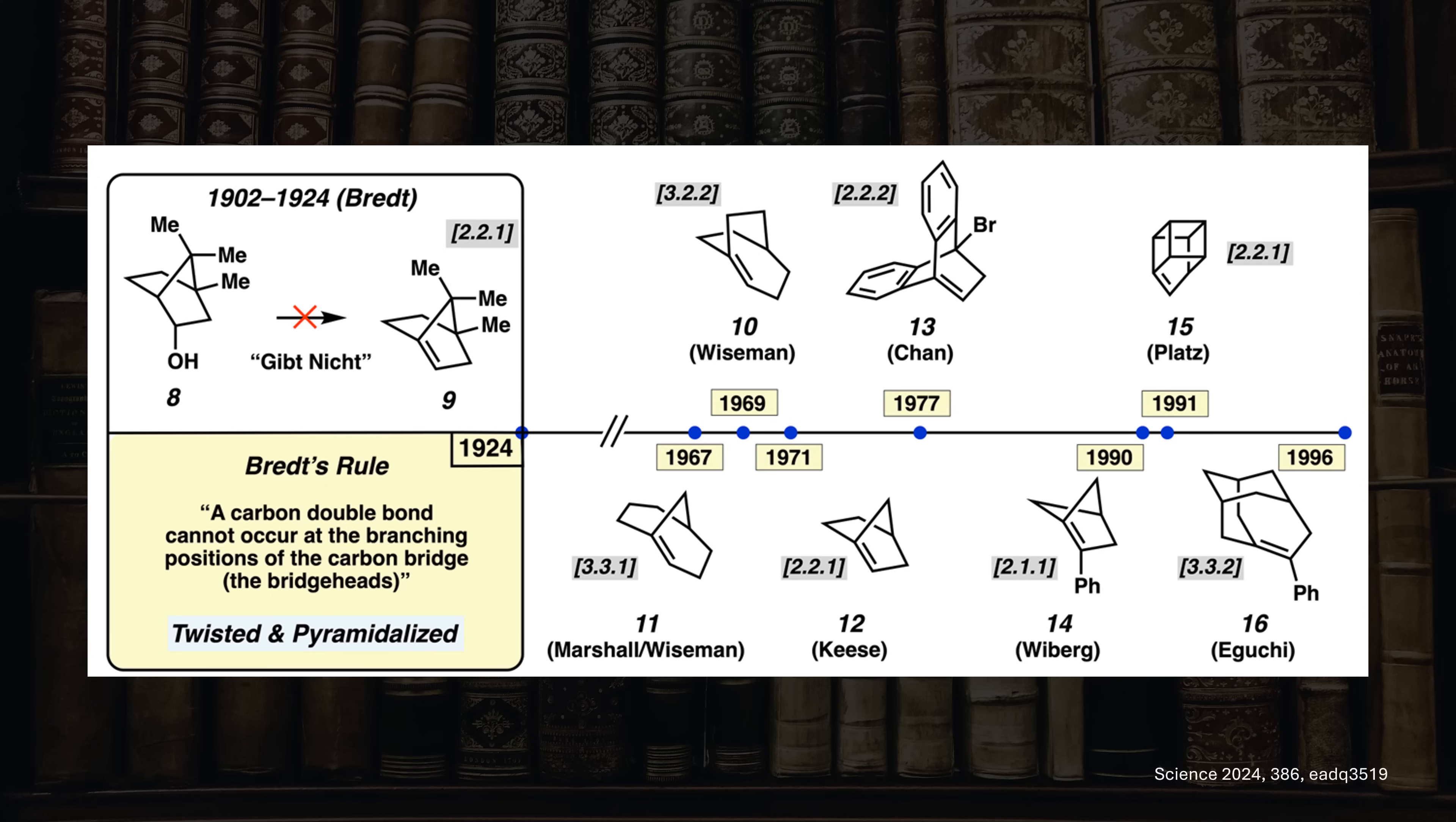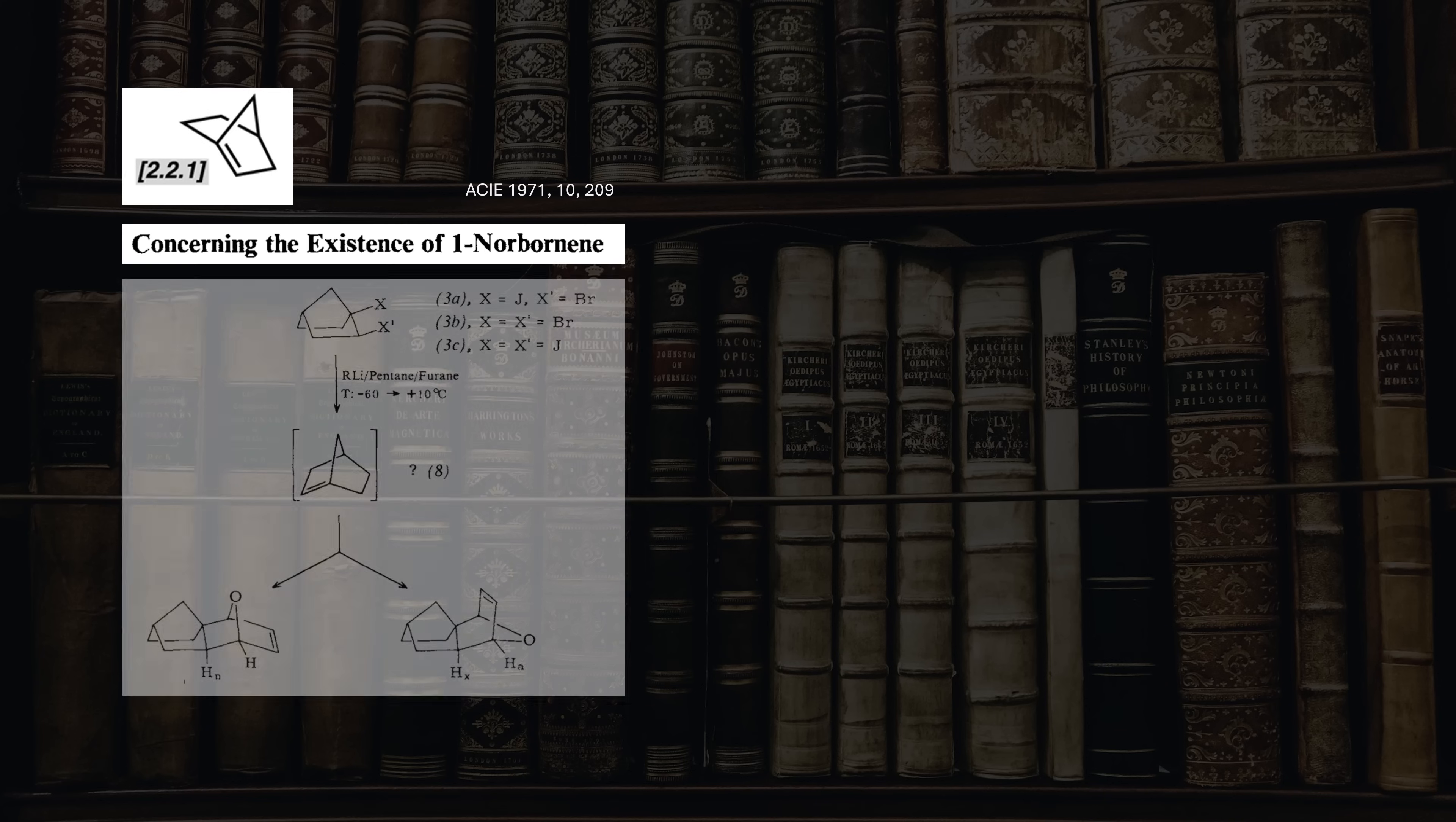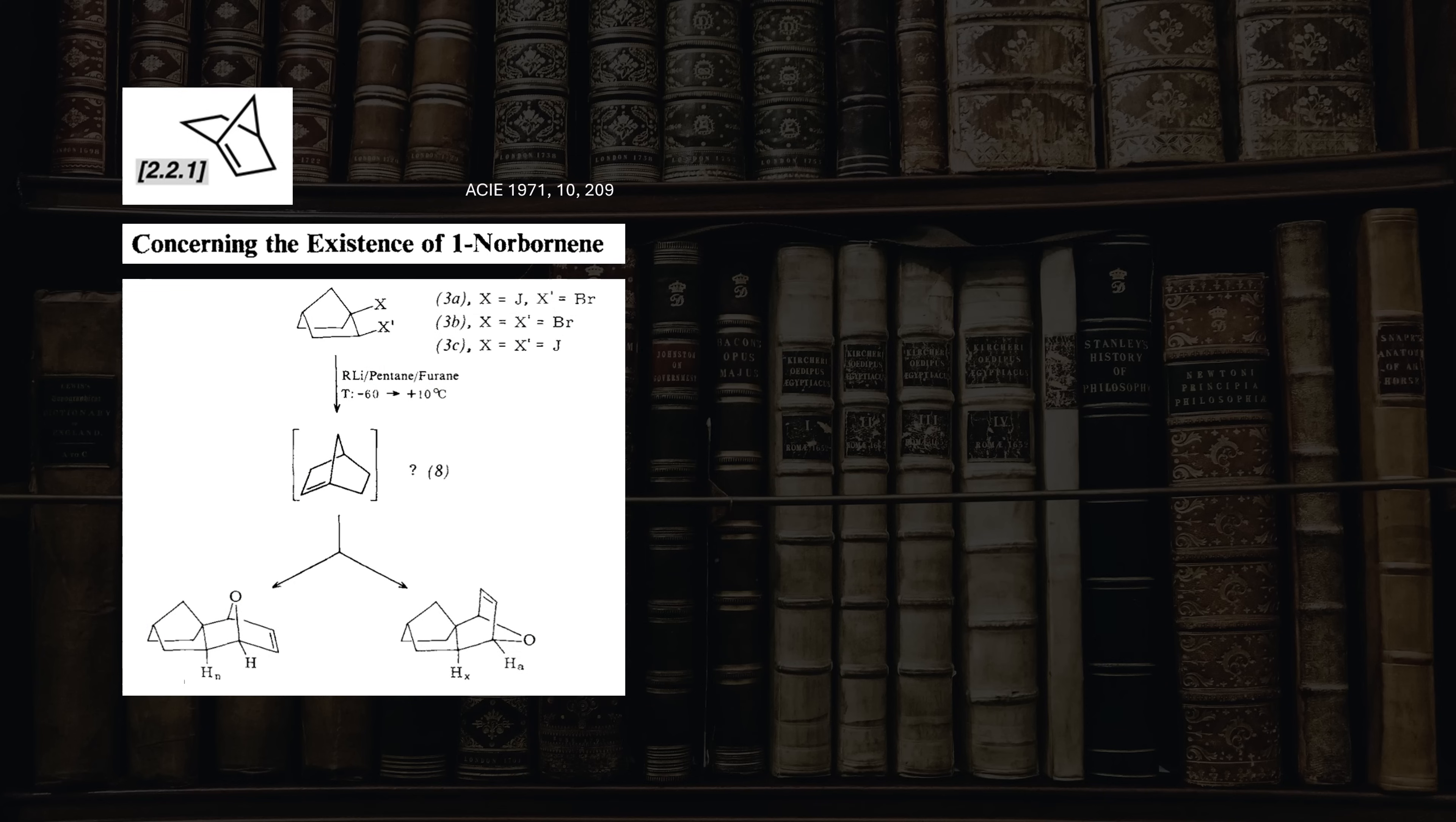Most of these used trapping experiments to capture these short-lived species, like 1-norbornene here as an example. In this case, the chemists ran a lithium-halogen exchange reaction of this dihalo precursor in the presence of furan. As they isolated the corresponding Diels-Alder adducts, it seems reasonable to assume that an anti-Bredt olefin with S equals 5 was formed and very rapidly intercepted by furan.